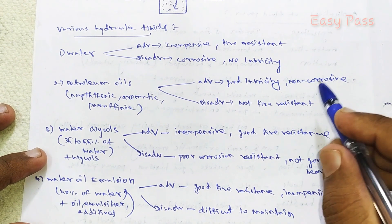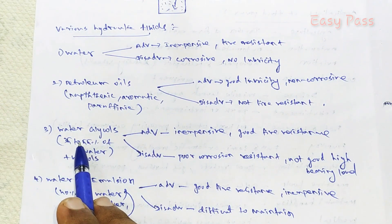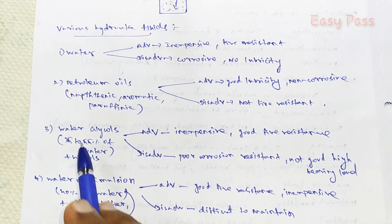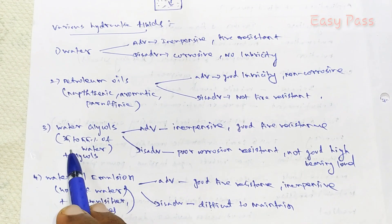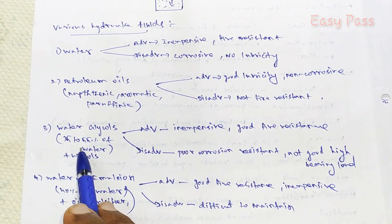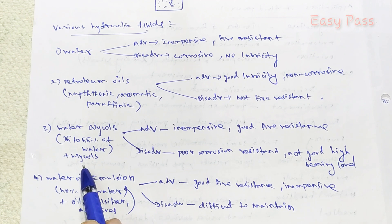Water-glycol hydraulic fluid contains 35 to 50% of water plus glycol additives.